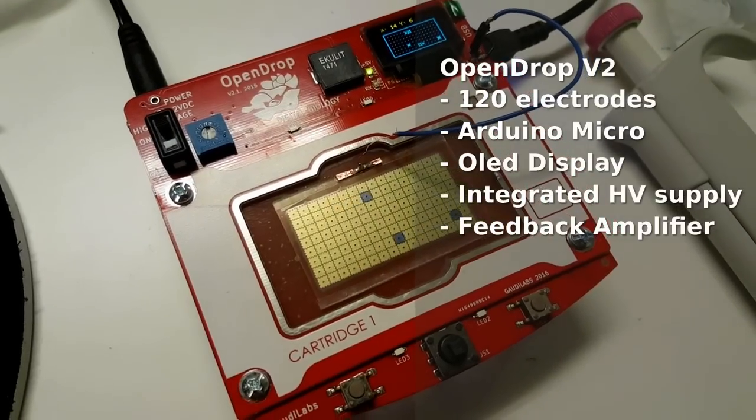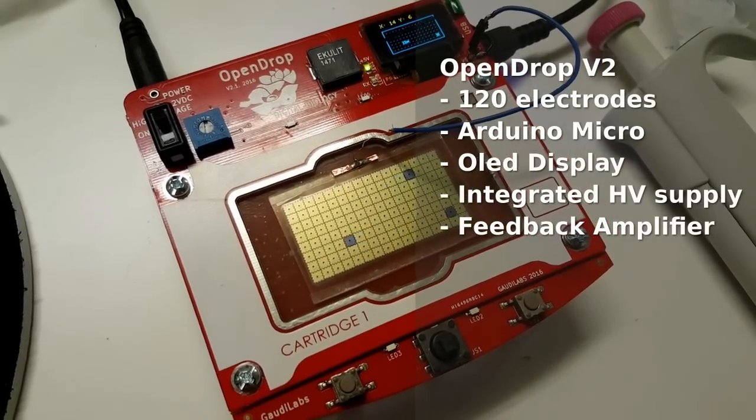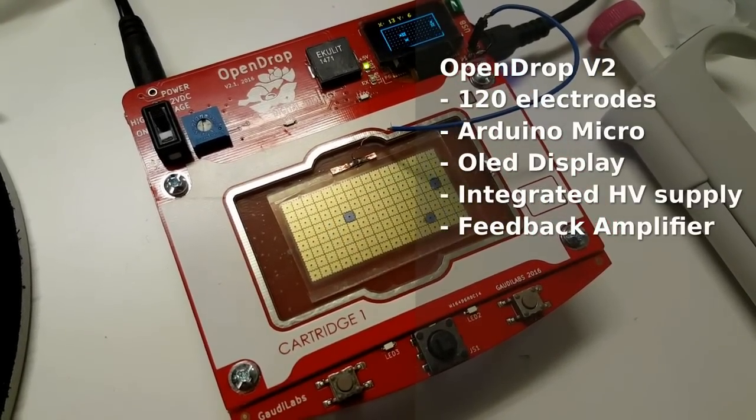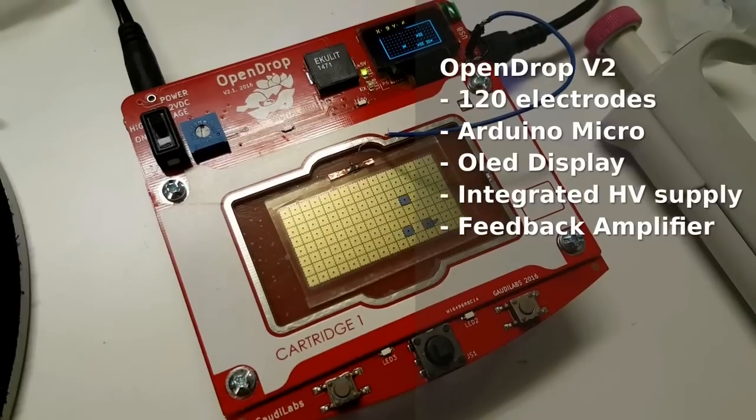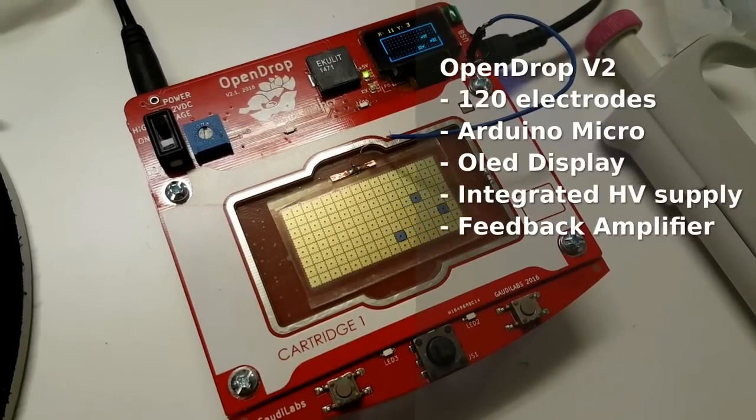The OpenDrop version 2 has 120 electrodes, is driven by Arduino Micro, has an OLED display, integrated high voltage supply, and now the working feedback amplifier.